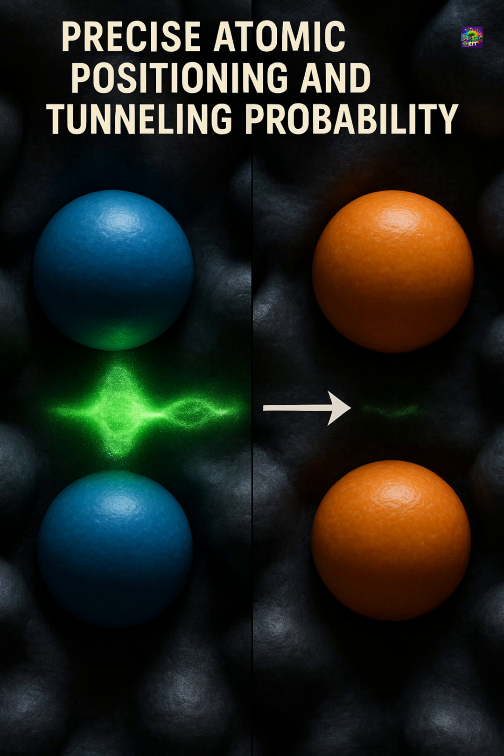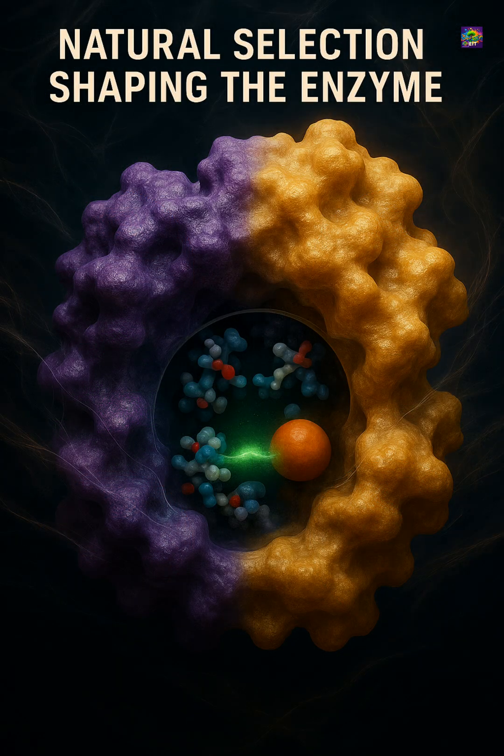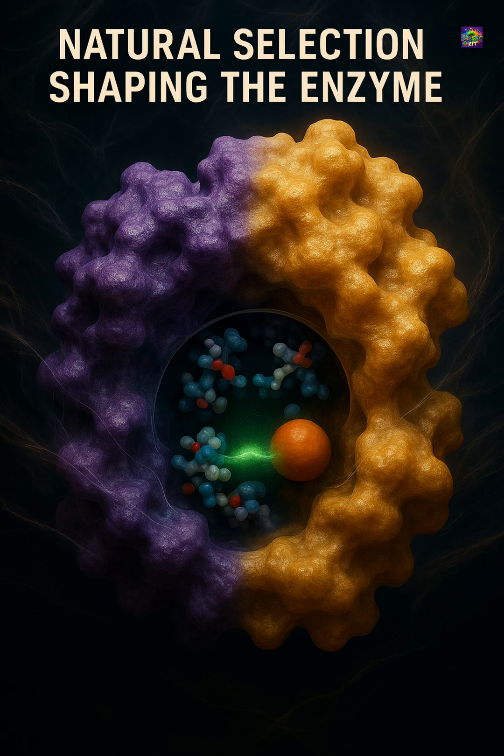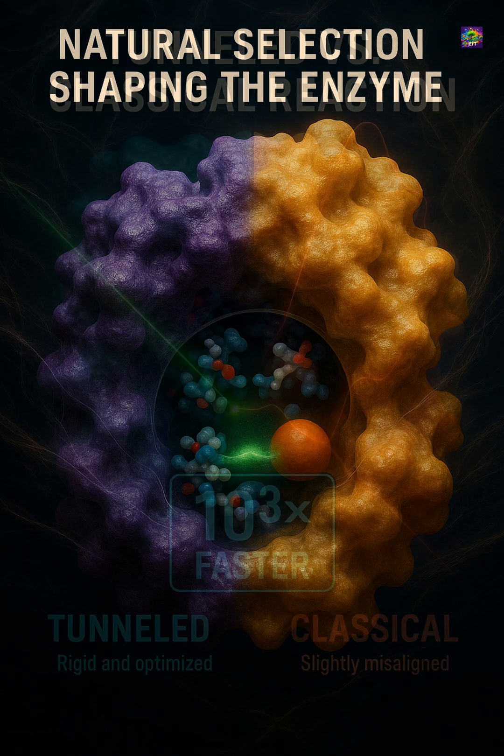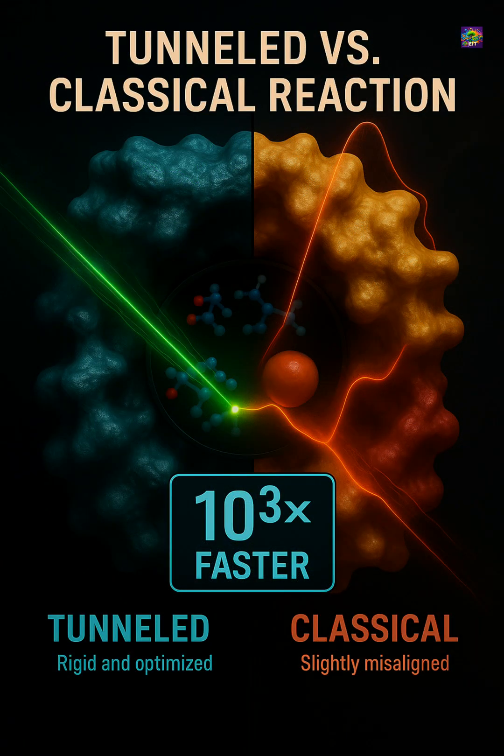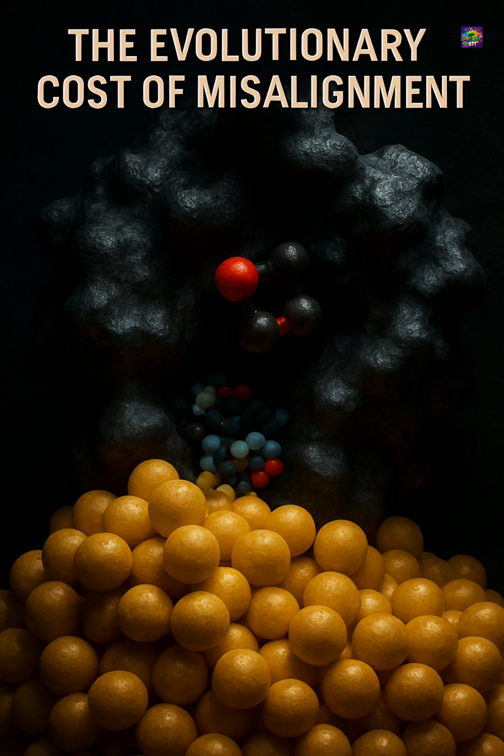What makes this important from an evolutionary perspective is how precisely enzymes are built to support this shortcut. Over billions of years, natural selection has shaped active sites so that the reacting atoms sit at distances where tunneling becomes much more likely. Even a small shift in the position of an atom can change the tunneling rate dramatically, and evolution has repeatedly tuned these details to keep metabolic reactions running fast and reliable.